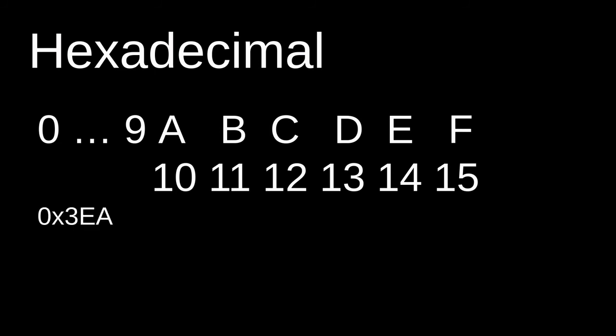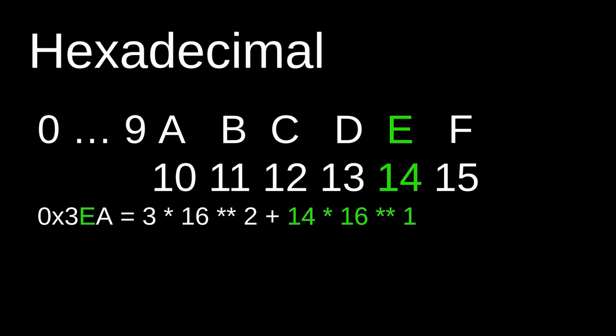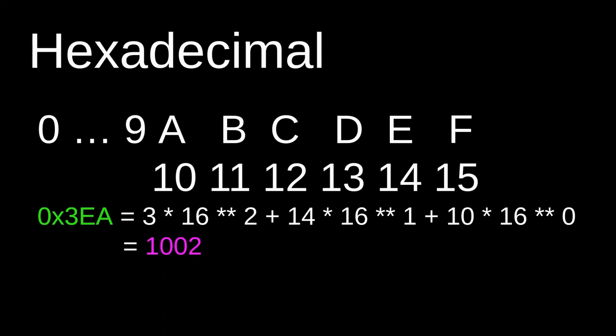For example, if we have a hexadecimal value 0x3ea — we prefix it with 0x to indicate it's hexadecimal — this equals 3 times 16 raised to the power of 2 (because 3 is in the second position, counting from the right starting at 0), plus 14 times 16 raised to the power of 1 (because e equals 14 and e is in the first position), plus 10 times 16 raised to the power of 0 (because a maps to 10 and a is in the 0th position). This equals 1002.